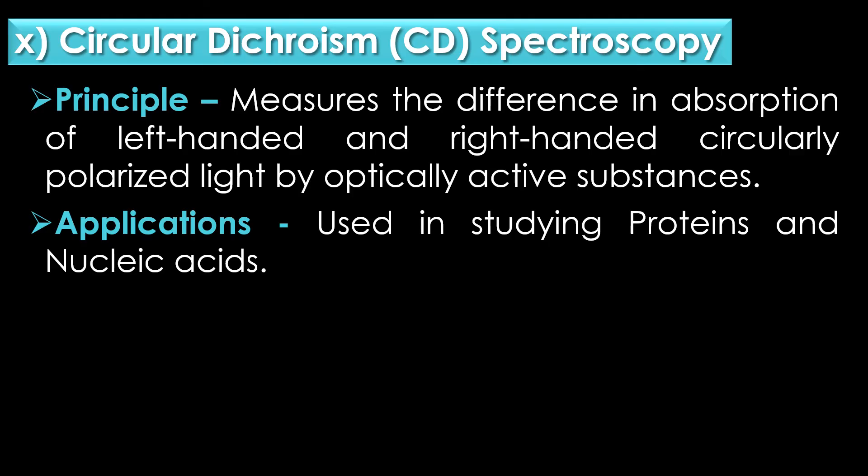The final and tenth type is circular dichroism spectroscopy. Circular dichroism spectroscopy measures the difference in absorption of left-handed and right-handed circularly polarized light by optically active substances. It is commonly used in studying proteins and nucleic acids.